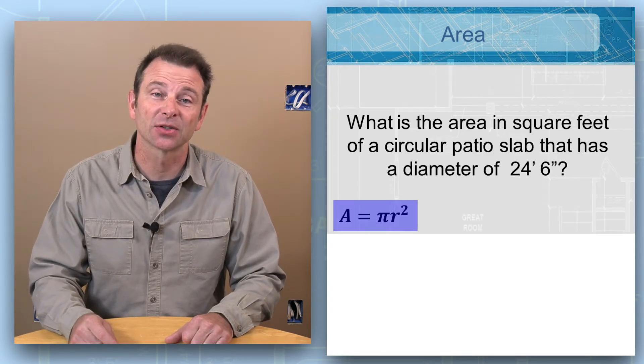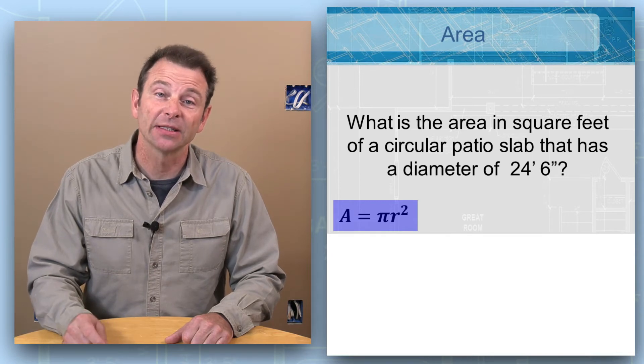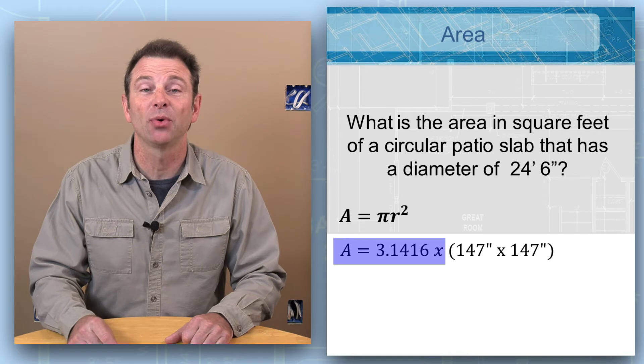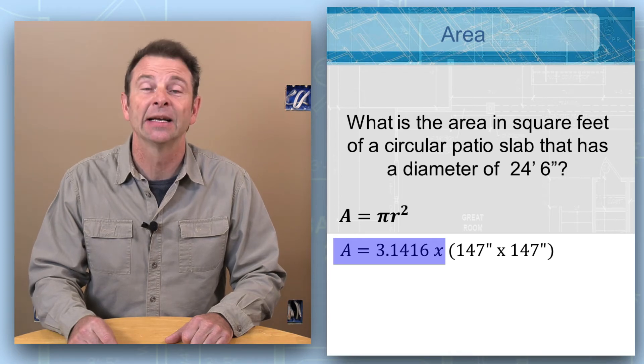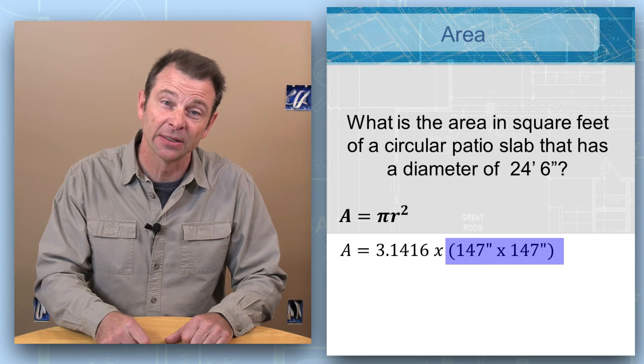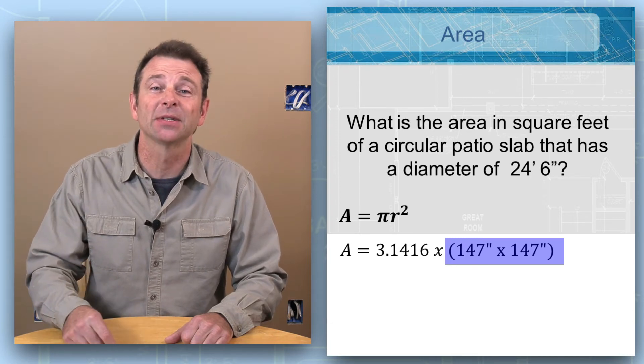Going back to our original formula, which is A equals pi r squared, we can plug in all these numbers and then solve it. So area equals pi, which is 3.1416, times r squared, which is going to be our 147, which is a radius, times the radius again, which is 147 inches.